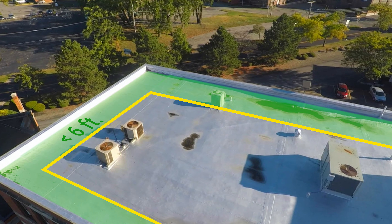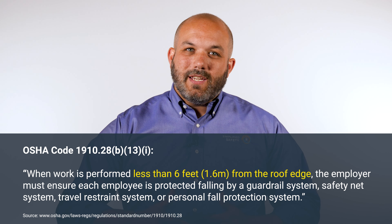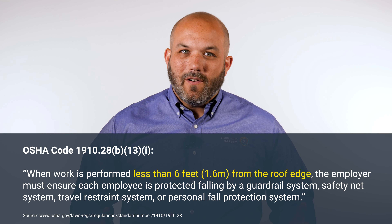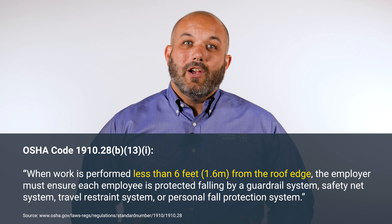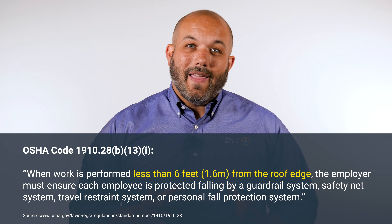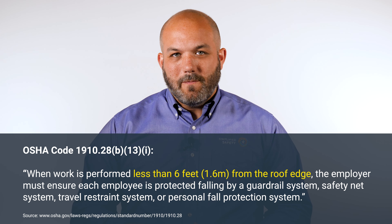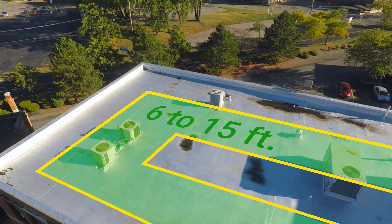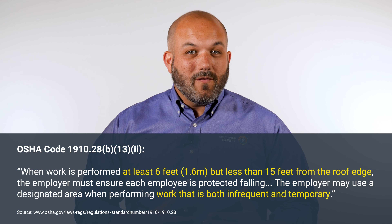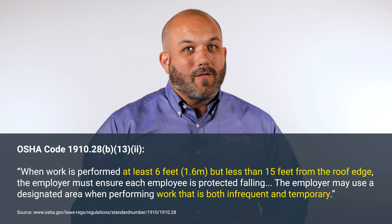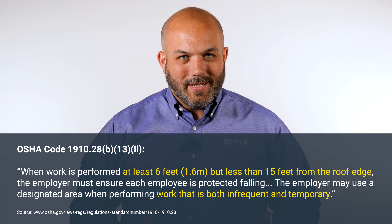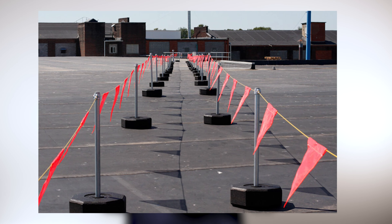The first layer is 6 feet or less from the roof edge. If you're within 6 feet of the roof edge, it doesn't matter if the work is temporary and infrequent — you're going to need standard fall protection like a guardrail or a lifeline system. The next layer is 6 feet to 15 feet from the roof edge. If you're within this zone and your work is temporary and infrequent, then instead of using standard fall protection, you can use a warning line system — a physical barrier that serves as a visual warning alerting people of a potential hazard like the roof edge.